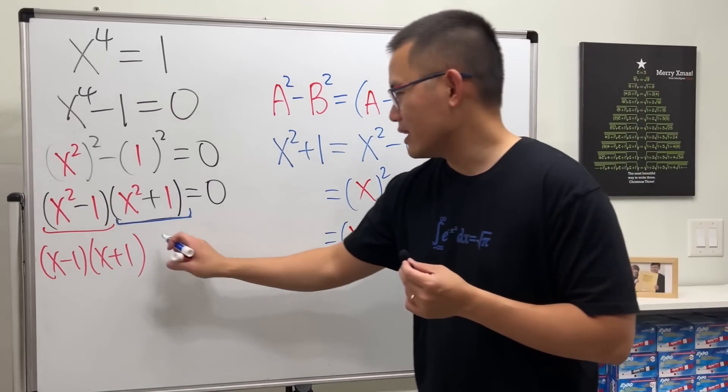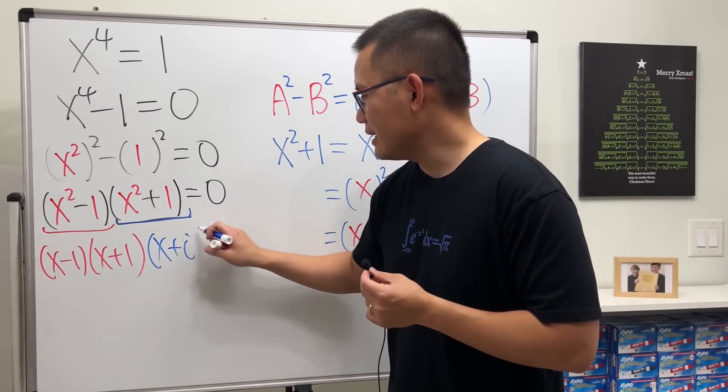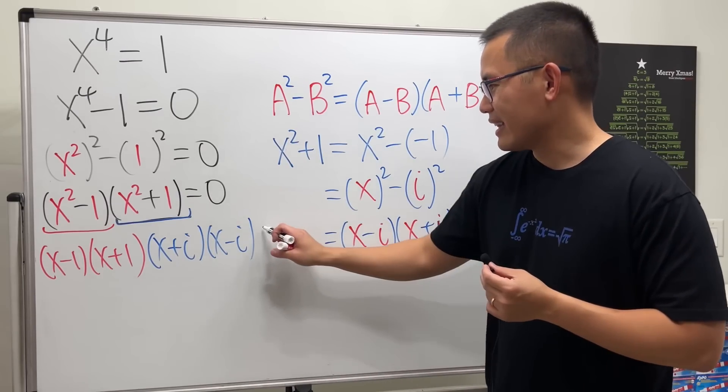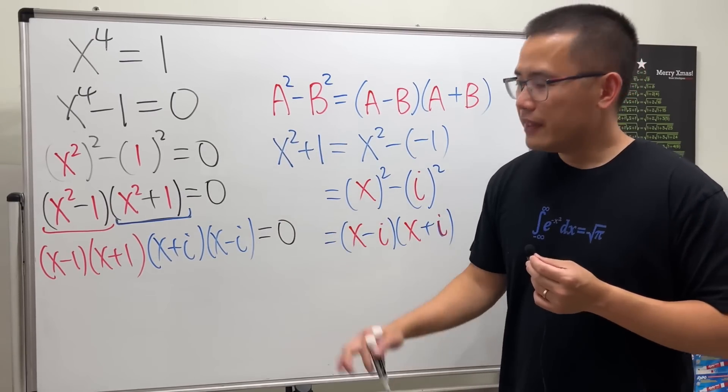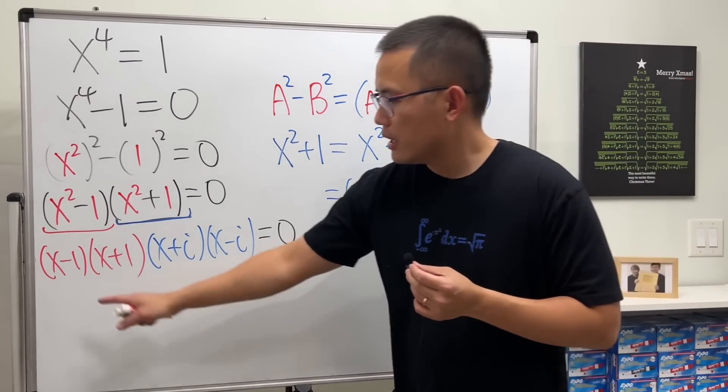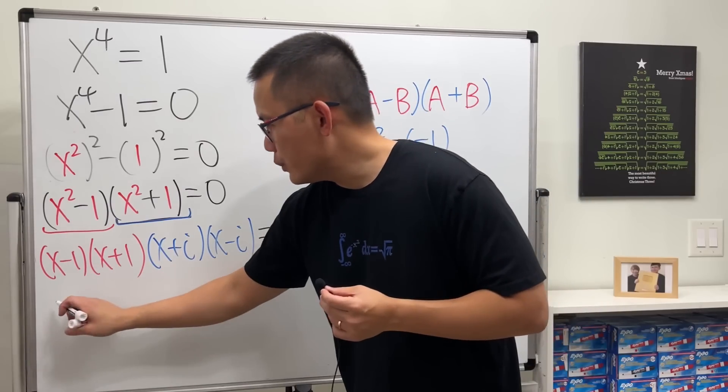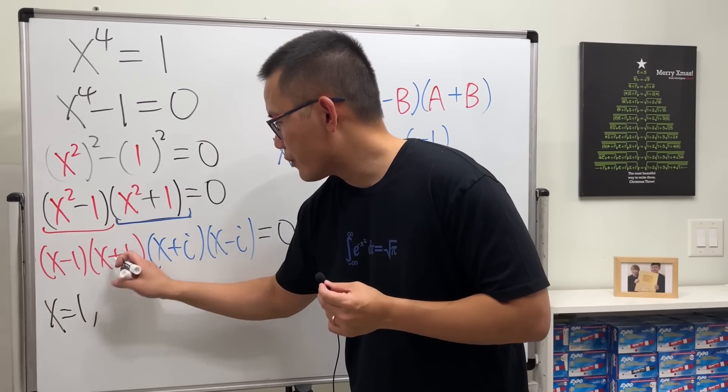So, that's exactly all we need: x plus i times x minus i. And that's equal to 0. Now, as you can see, we have a total of four factors. Setting each one equal to 0 and then isolate x. From here, we get x is equal to 1.